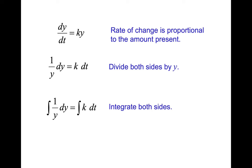So on the left, we get ln of the absolute value of y, because y could be negative, but it can't here because when you take the natural log it has to be positive. And over here, we're just going to get kt plus a constant. So that's when we integrate both sides.